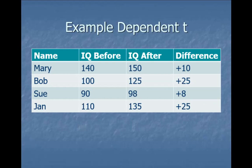Instead, I'd say: everybody improved on their IQ after taking vitamin K. And maybe I would even report a number that best represents everyone. Do we have a number we've learned how to calculate that best represents an entire group? Hopefully you're thinking about the mean.